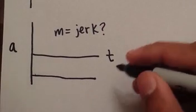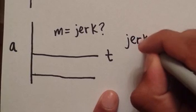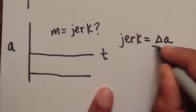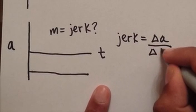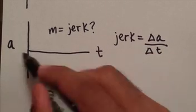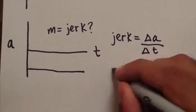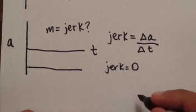So what is jerk? Jerk is the change in acceleration over a change in time. Since acceleration is constant, the slope will be zero. So in this case, your jerk would be zero.